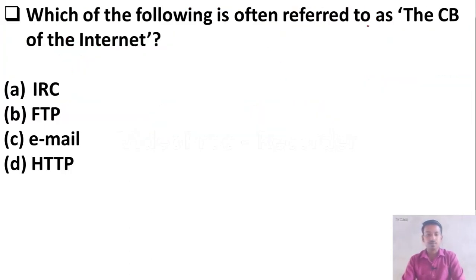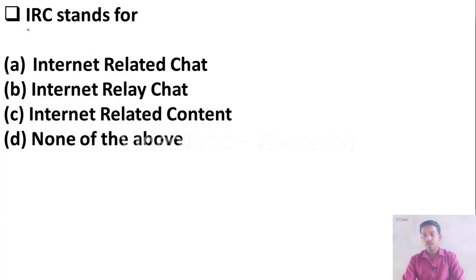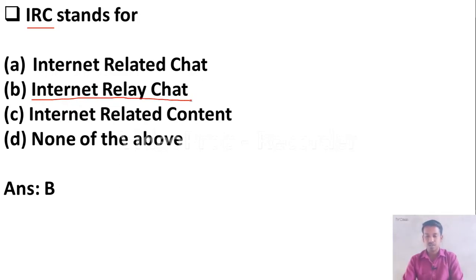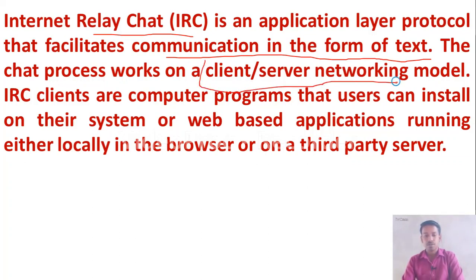Which of the following is referred to as the CB of the internet? Option A: IRC, Option B: FTP, Option C: E-mail, Option D: HTTP. The right answer is Option A, IRC. IRC stands for Internet Relay Chat. IRC is an application layer protocol that facilitates communication in the form of text, and the chat process works on a client-server networking model.